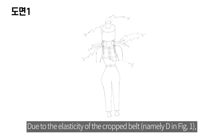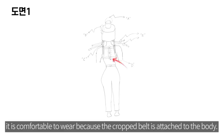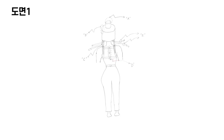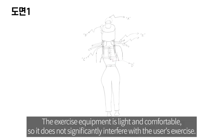Due to the elasticity of the cropped belt, namely D in Figure 1, it is comfortable to wear because the cropped belt is attached to the body. The exercise equipment is light and comfortable, so it does not significantly interfere with the user's exercise.